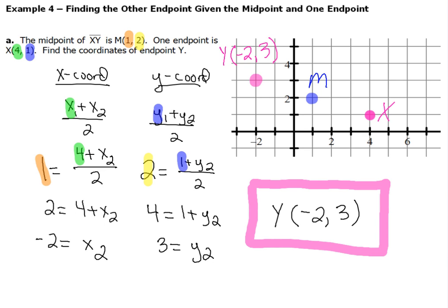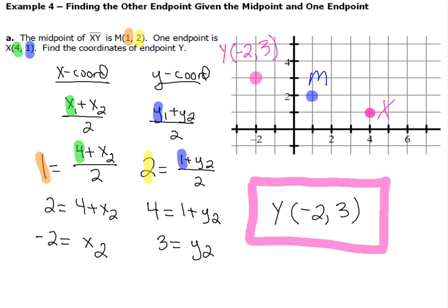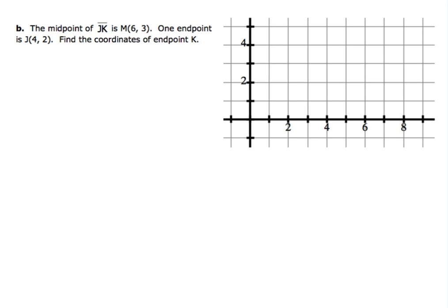Now if you understood this, go ahead and pause the video and try Example B. If you didn't understand it or you want to go through one more example, let's go ahead and get after Example B. For Example B, we've got the midpoint of JK being midpoint M at (6, 3), and one endpoint that we're given is J at (4, 2). Find the coordinates of endpoint K.